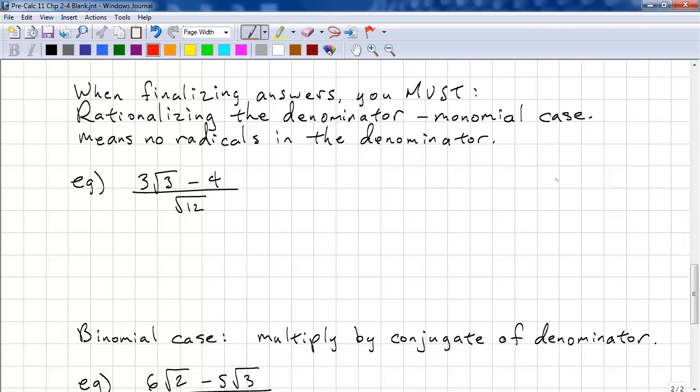So, let's start off with a monomial case. Here, we have 12. So, we multiply the numerator and the denominator by root 12. And we'll simplify this. We need to distribute inside the bracket. So, root 12 needs to be multiplied by the first term and the second term. So, we have 3 root 36 minus 4 root 12. Root 12 times root 12 is 12.